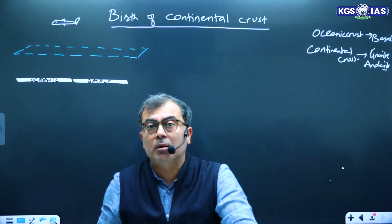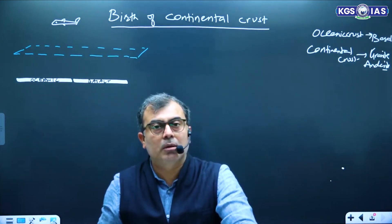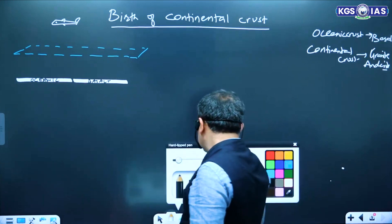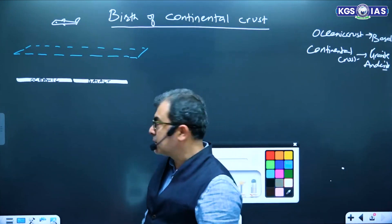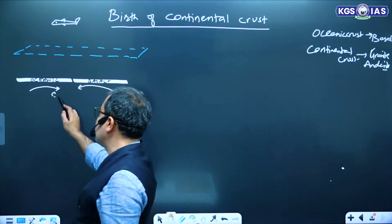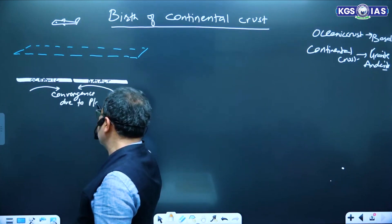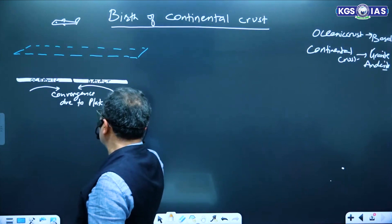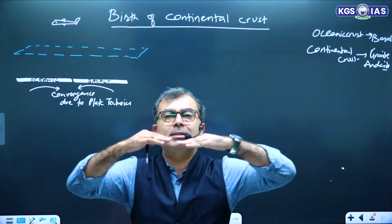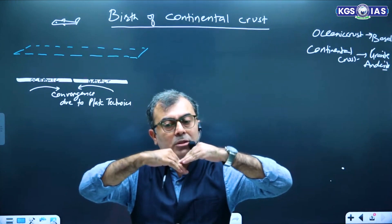Now plate tectonics started. What happens is plate tectonics starts, and forces from the Earth's interior cause convergence. We've already talked about convergence and divergence. The plates come together, and what happens is the heavier one will go inside — that process is called subduction.